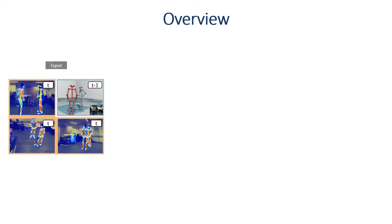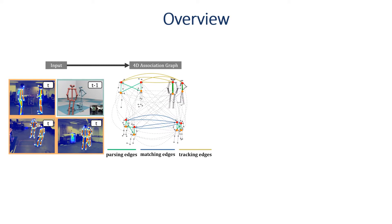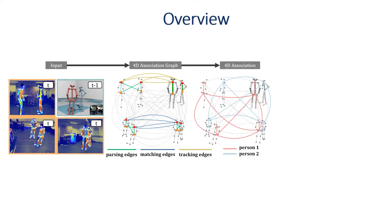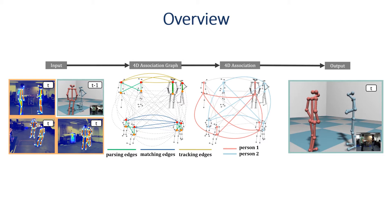We input body part positions and connection confidence of different views together with 3D skeletons of last frame. Then we build 4D association graph. After we get the 4D graph, we can perform a bundle Kruskal algorithm that outputs the assembling results. Finally, we optimize the assembled multi-viewed 2D skeletons to form 3D results of current frame.